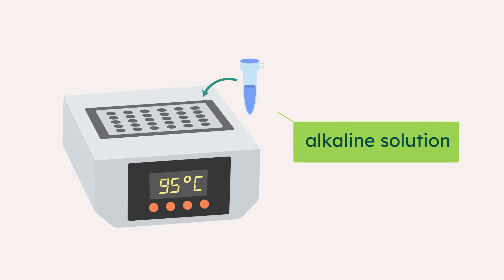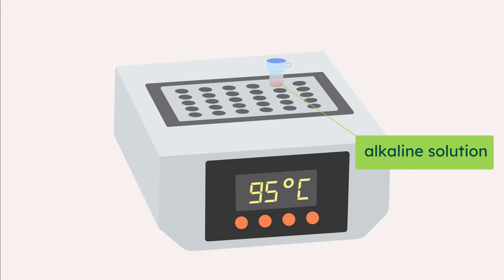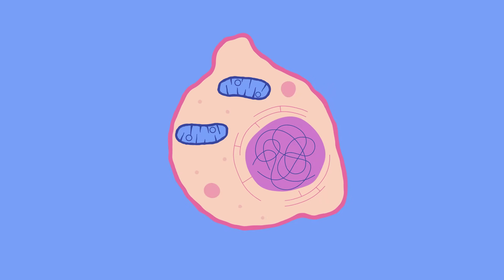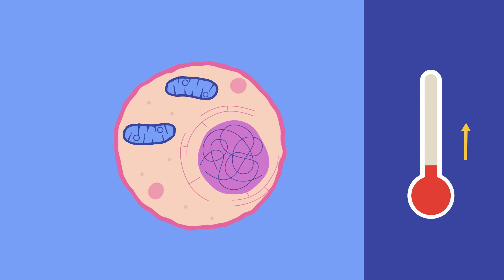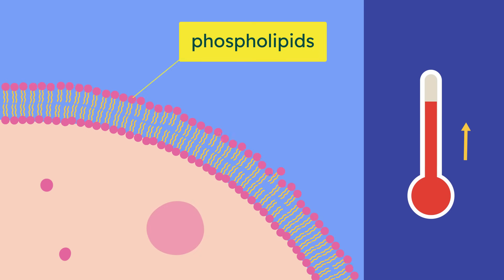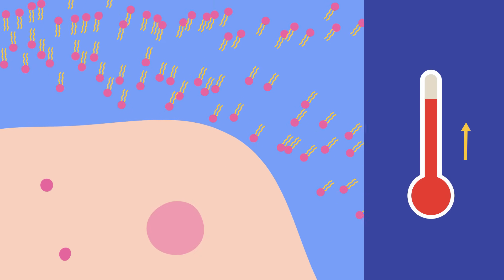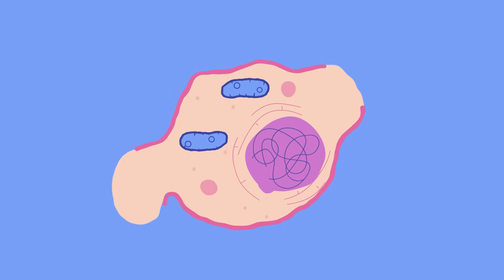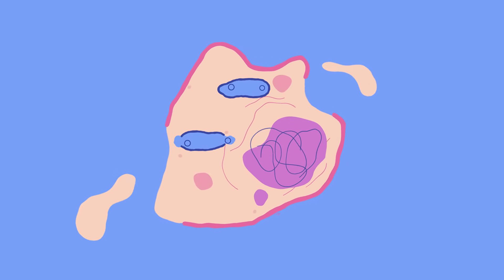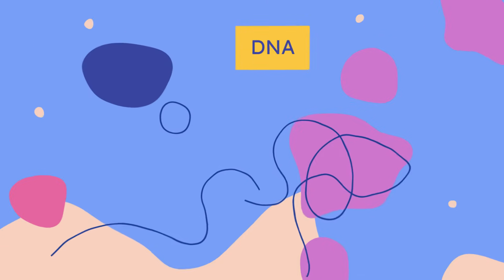To lyse the cells, they are heated in an alkaline solution. Alkalinity helps to disrupt the cell membranes. Heating the cells increases the kinetic energy, which increases the movement of phospholipids in the membranes. This disrupts cellular membranes and organelle contents are released, including DNA.